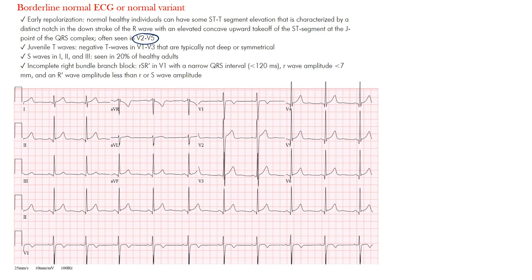The ST segment elevation here is concave up, which tends to be a more benign finding. One memory aid: if you follow that curve and add two dots, it looks like a smiley face — a more benign finding. There are different morphologies to the ST segment, and this concave-up shape tends to be more benign, though not always. So that's what we can see with a borderline normal ECG: everything else is normal, but you note that finding in the anterolateral precordial leads.